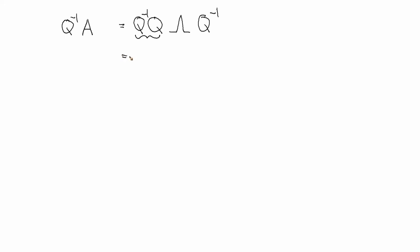So this is the same thing as the identity times lambda times Q inverse. And the identity matrix times any matrix is just that matrix. So if I group these two terms, the identity matrix times lambda is just lambda. That's equivalent to lambda Q inverse.